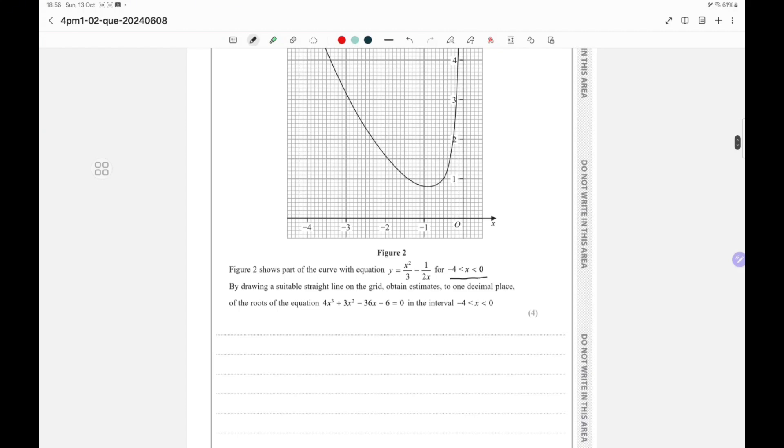So here what I have to do is draw a straight line on this graph. This is the equation of the graph given. I think I need to find the intersection, the roots of the equation. So I have 4x cube plus 3x square minus 36x minus 6 equals 0. Now if I do this: 4x cube plus 3x square equals 36x plus 6.